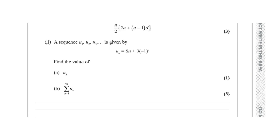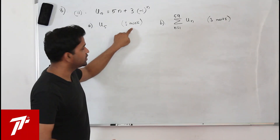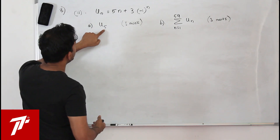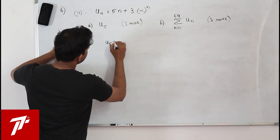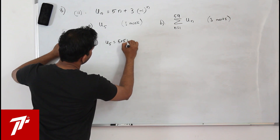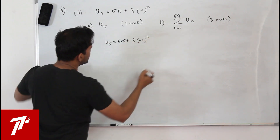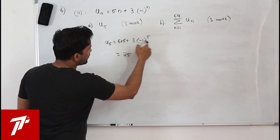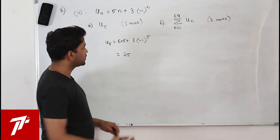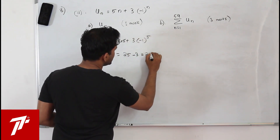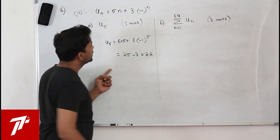The second part of question 8: a sequence is given by un equals 5n plus 3 into minus 1 to the power n. Find the value of u5. This part has only one mark, so it's straightforward. Substitute n equals 5: u5 equals 5 times 5 plus 3 into minus 1 to the power 5, which is 25 minus 3, giving u5 equals 22.